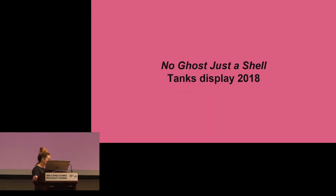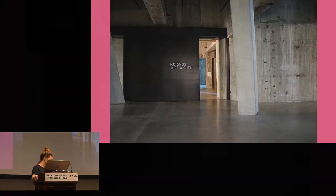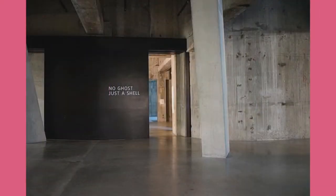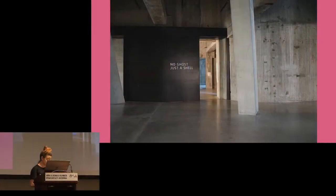In 2018, Tate decided to display No Ghost, Just a Shell in the Transformer Galleries — the former oil tanks — huge, imposing concrete spaces. For those who've never been there, the tanks are a conservator's nightmare. They require the most creative approach to figure out how to display anything. The structure is untouchable; they're dusty, humid spaces that cannot be altered permanently — the opposite of a white cube, which is quite exciting in a way too.